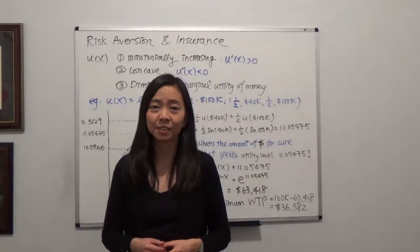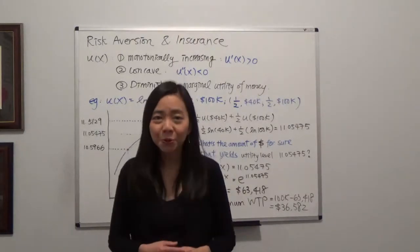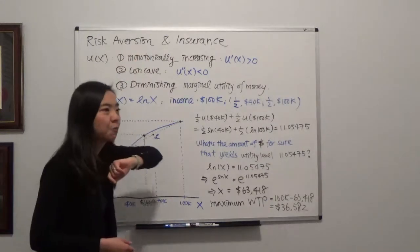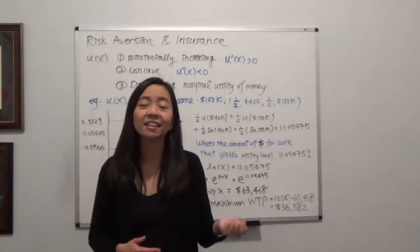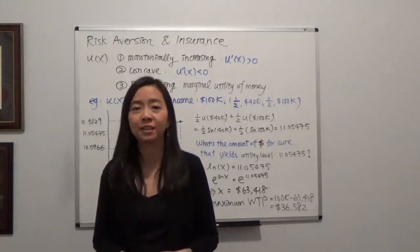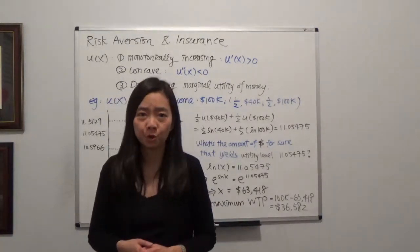Hello, everyone. My name is Iris France Lian Wan-Ru. Today, we're going to continue to talk about expected utility. In particular, I want to talk about risk aversion and insurance, and also about how much money you're willing to pay for insurance in order to avoid certain risk.